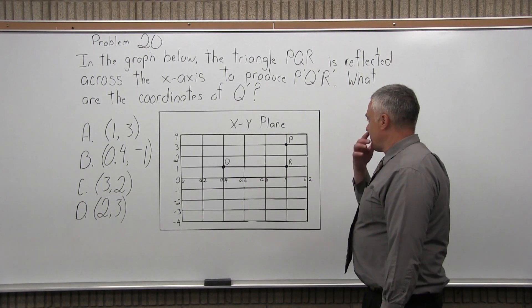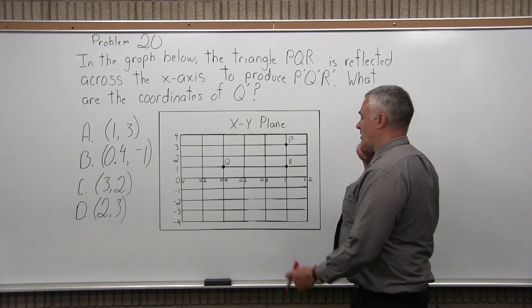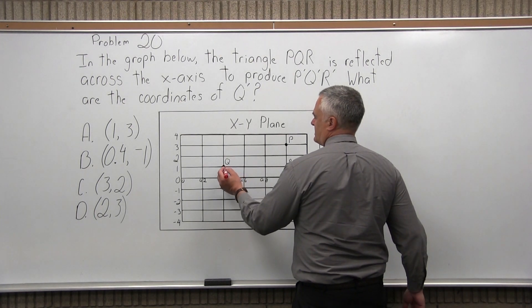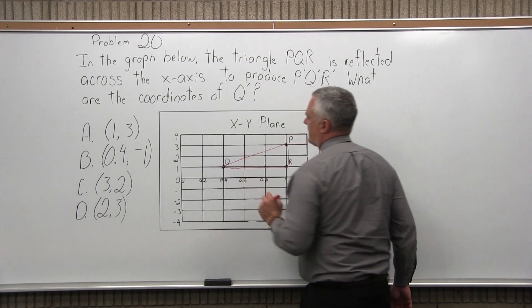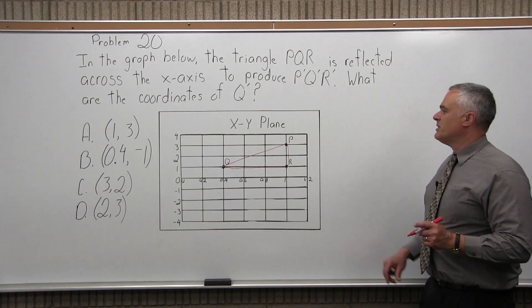So we have a graph. If we have Q, P, and R that form a triangle, so just to make it show up a little bit, we've got that triangle, QPR.